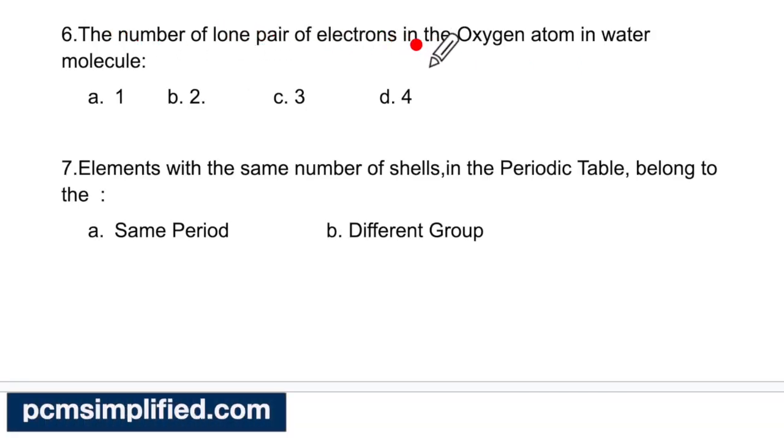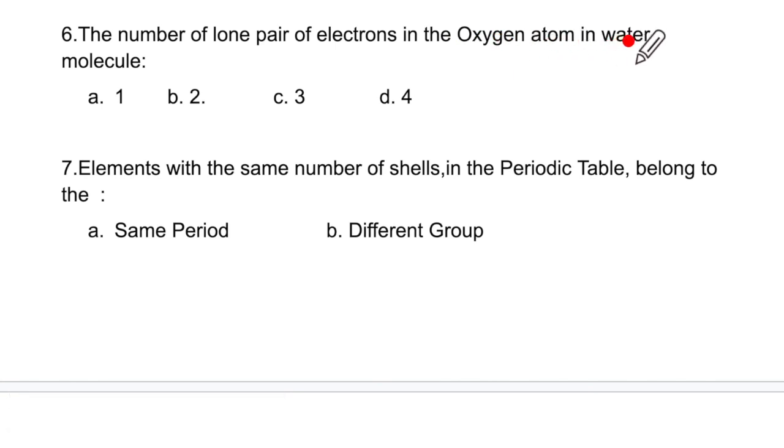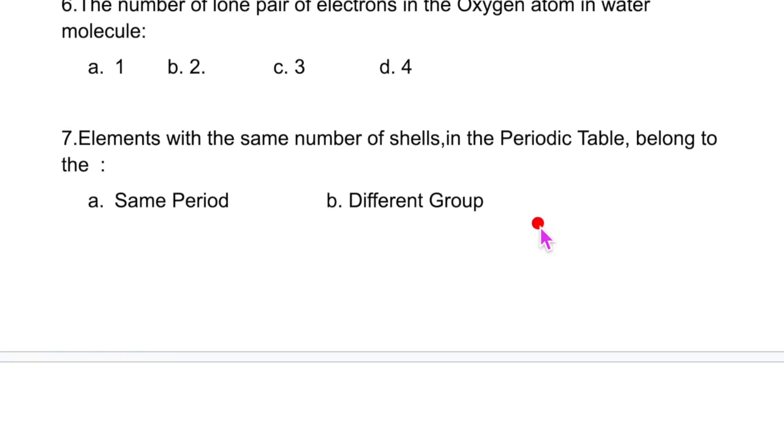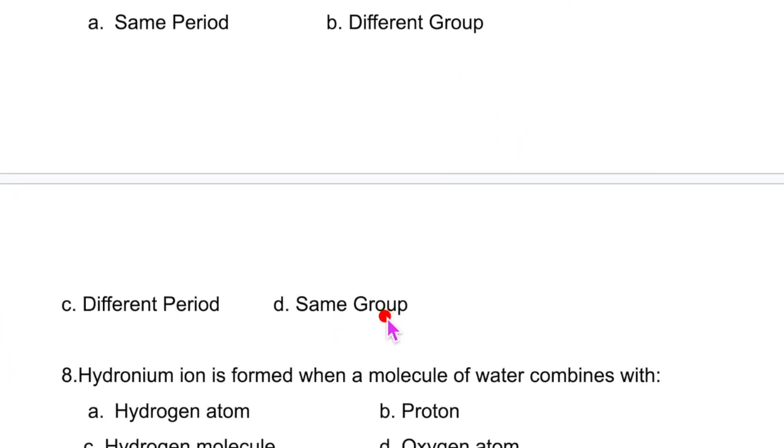The number of lone pair of electrons in oxygen atom in water molecule. Oxygen has 2 lone pairs here, then this is shared with H and H these 2 electrons. So how many lone pairs you see? 2. So B is the option. Elements with same number of shells in the periodic table belong to the same period. So this is the correct option.